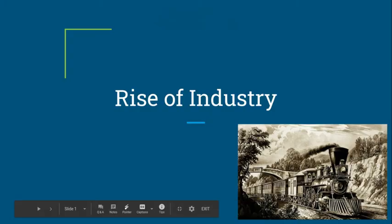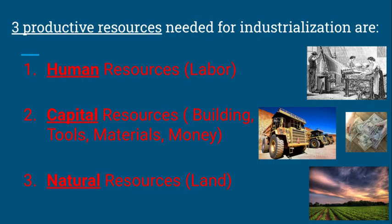The rise of industry. Right here, this is a steam engine locomotive, also known as a train. This is a pretty big industrial invention that we're going to go into today. Starting off, as I did this PowerPoint, I highlighted what you should type or write in your notes template in red. I think that might make it a little bit easier. Some of them are already filled out for you. We're going to go into the three productive resources needed for industrialization. These three things are really important — every aspect of industrialization or the rise of industry in a successful economy could go into these three categories.